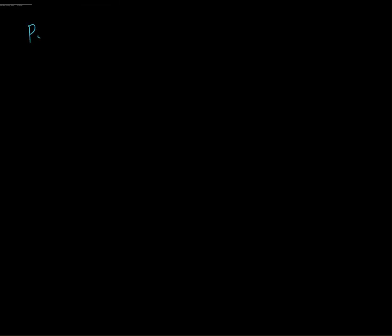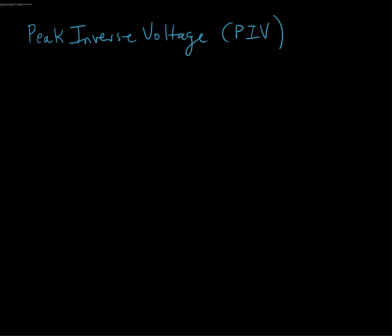This video talks about something called peak inverse voltage or PIV. It is the voltage that is across a diode when the diode is reverse biased. We need to make sure that the diodes we're using in a particular circuit have been rated to withstand that voltage without breaking down. Let's look at the rectifier circuits and figure out what the peak inverse voltage is going to be for each case.